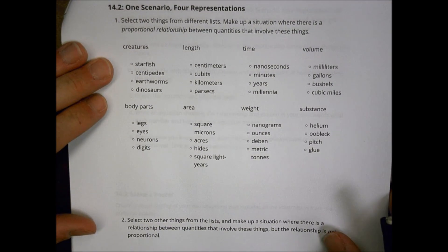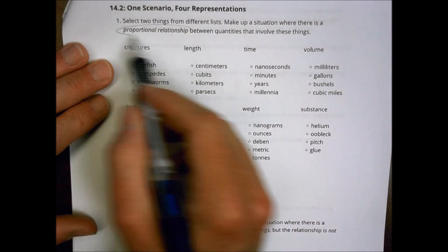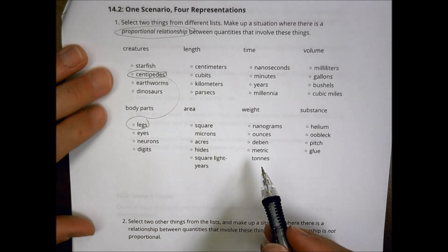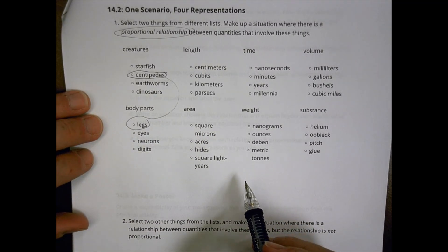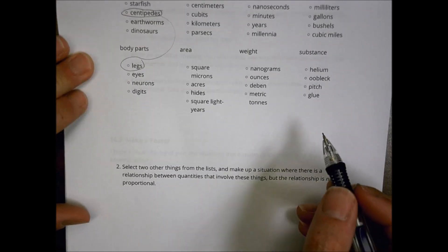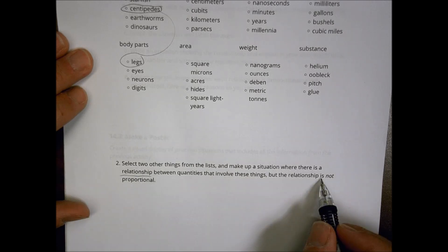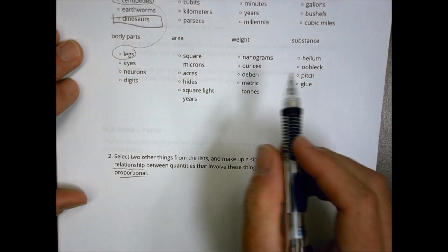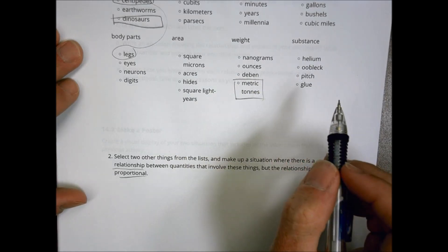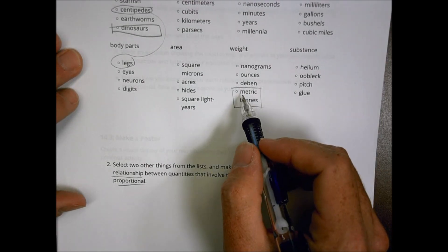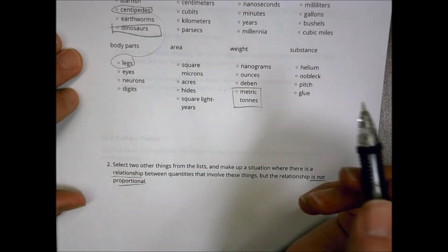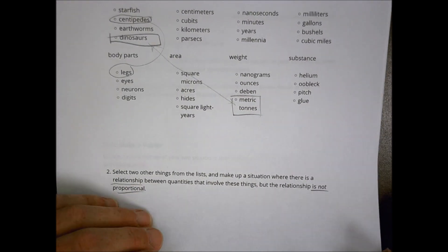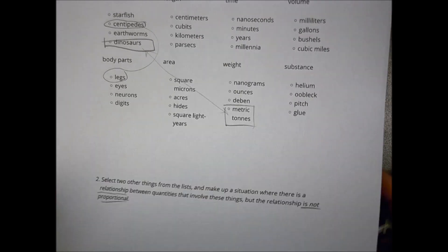In another situation, you selected from a list to create a proportional relationship between quantities. For example, centipedes and the number of legs could have a proportional relationship and make a nice graph. But something like dinosaurs and weight might not be proportional — because dinosaurs come in all different sizes, shapes, and ages, so it won't produce a straight line.